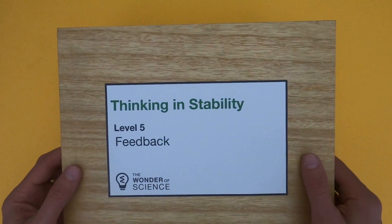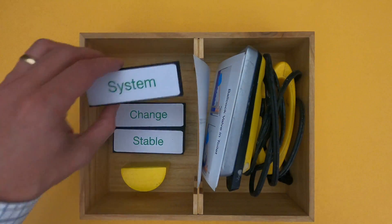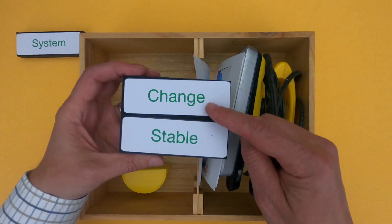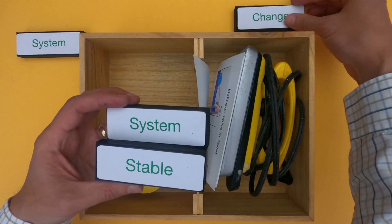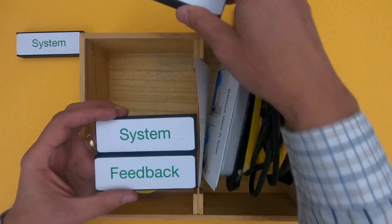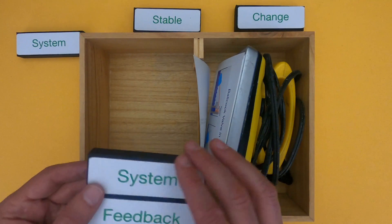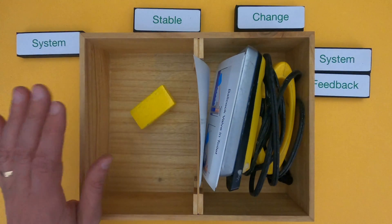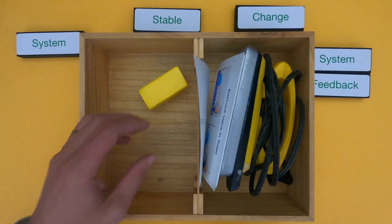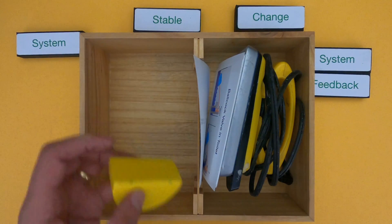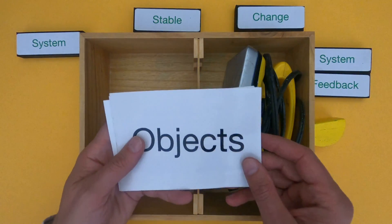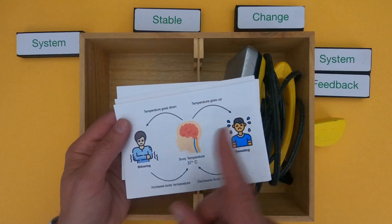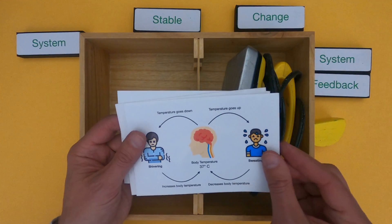Hi, it's Mr. Andersen and this is Thinking Instability Level 5 Feedback. If you want to control a system and keep it stable over time, number one, you have to define what the system is, but you will always have to change the system a little bit before you eventually get it stable. We're going to be looking at an iron — you have to increase the heat before you eventually reach a set point — and a way to do that is using system feedback.